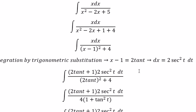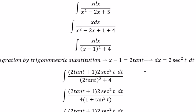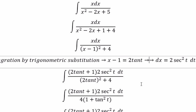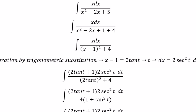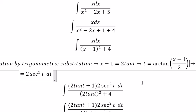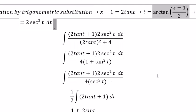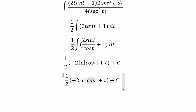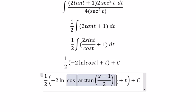About t, we need to change back. So we divide both sides by 2. And you got t equals arctan of x minus 1 over 2. So we put this one here and here.